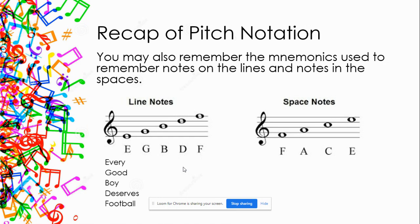One of the mnemonics might be 'Every Good Boy Deserves Football' — that tells us the notes on the lines. The notes on the line are the ones that have the line going through them. A note that's in between two lines is called a space, whereas a note with a line going through it is called a note on the line. The notes on the lines are E, G, B, D, and F. The mnemonic to remember that is 'Every Good Boy Deserves Football.'